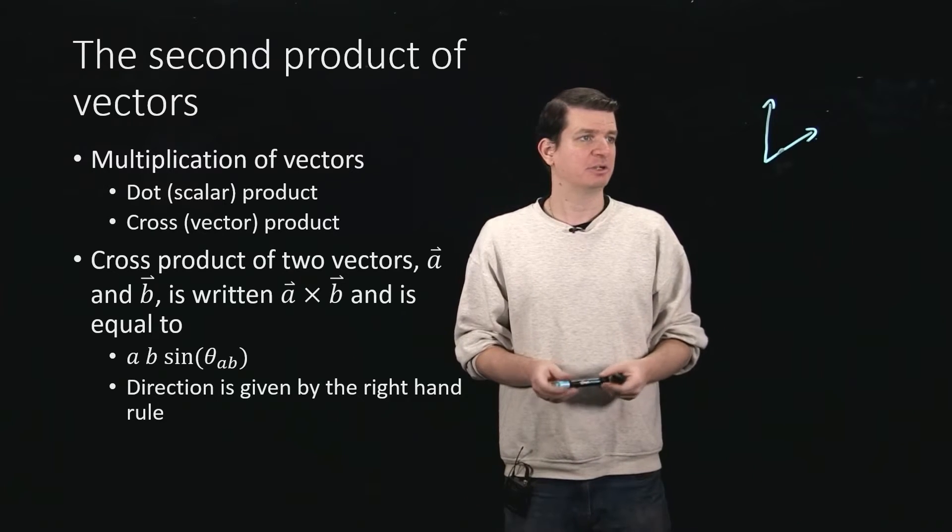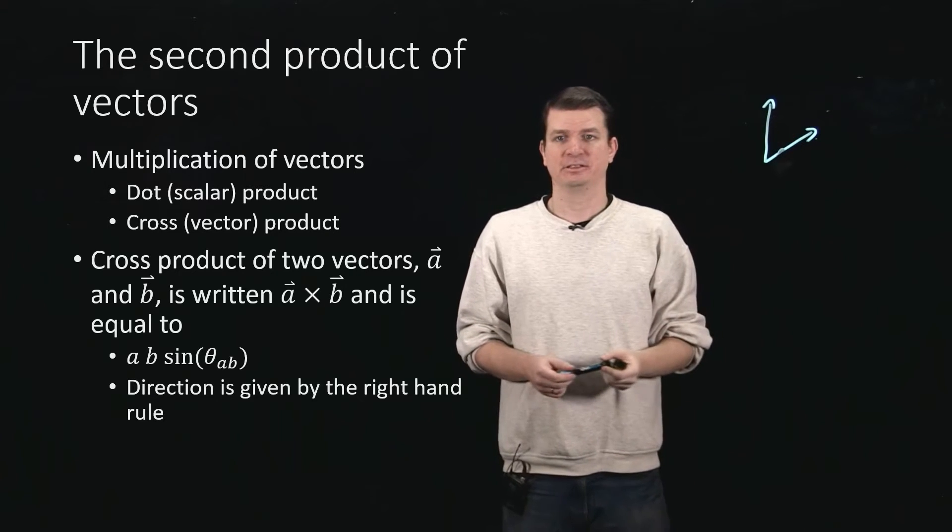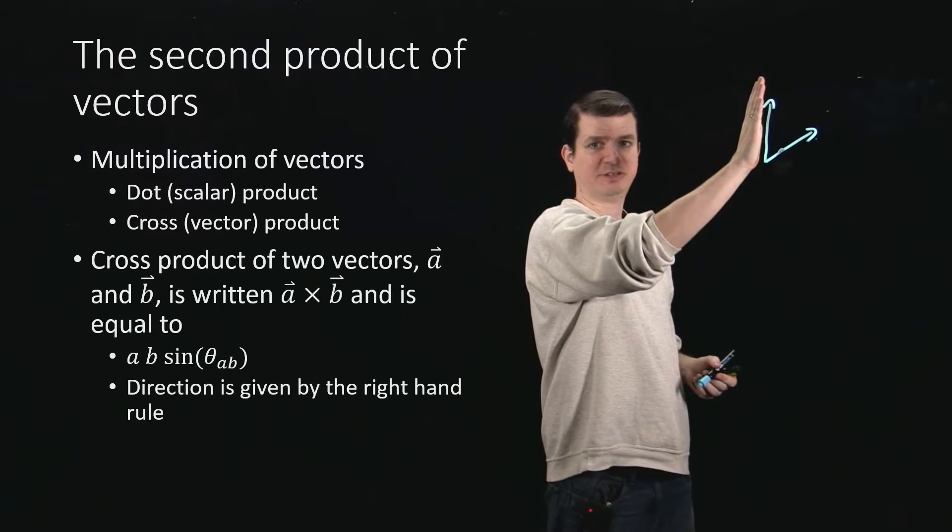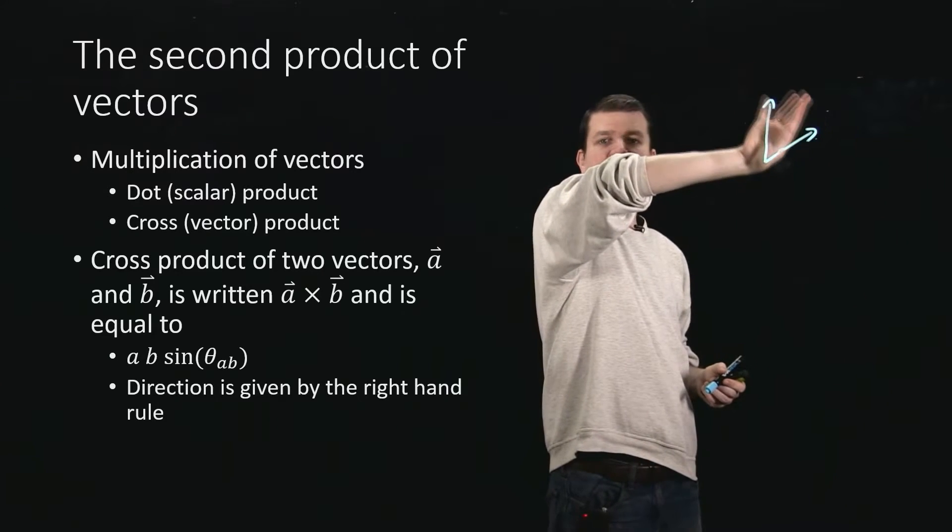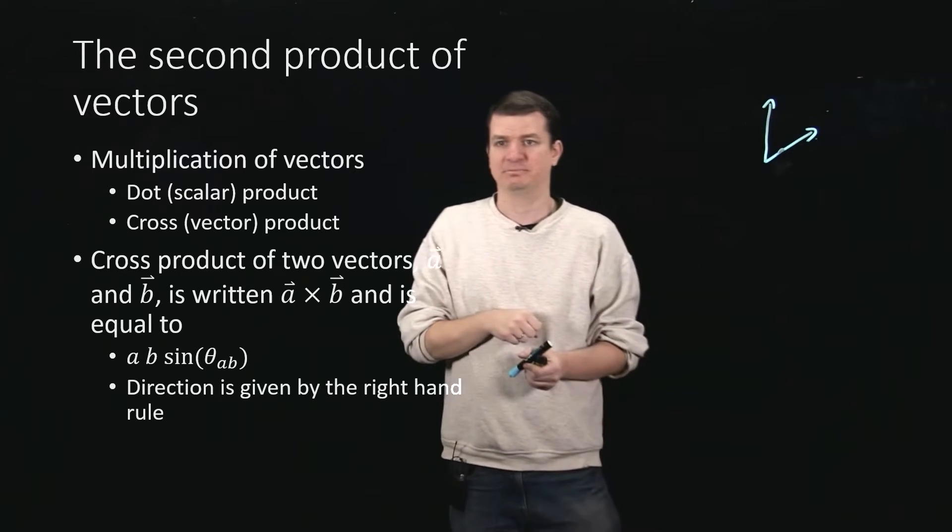So if I'm taking the cross-product of this vector with this vector, then I take my right hand and I put my palm onto the first vector, and then I'll push it onto the other vector, and my thumb will point the direction.